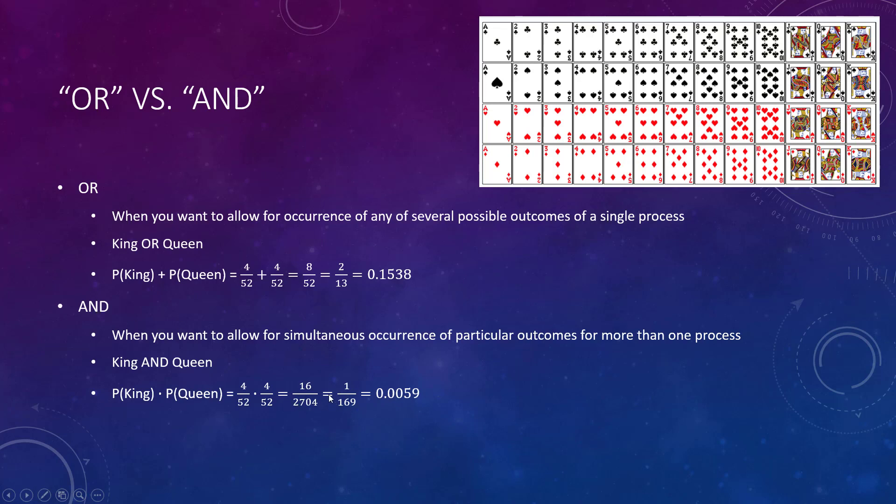With the AND, there's multiplication. Now one thing you're going to watch is some problems will say without replacement. The probability you draw a king and then you draw a queen, well wouldn't there just be 51 cards? So be sure you read whether they're actually replacing the card back. This example would be you drew a king, put it back in the deck, and then next you drew a queen.